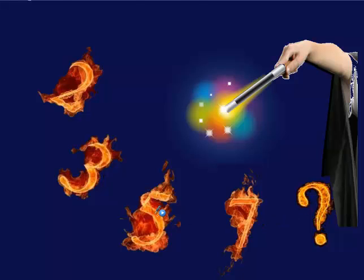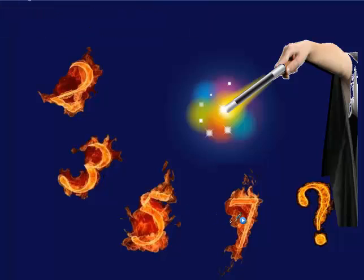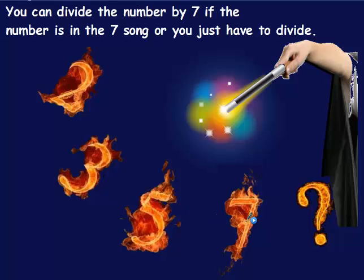You can divide a number by 5 if a number ends in a 5 or a 0. You can divide a number by 7 if the number is in the 7 song, but if the number is bigger than the 7 song, you just have to divide.